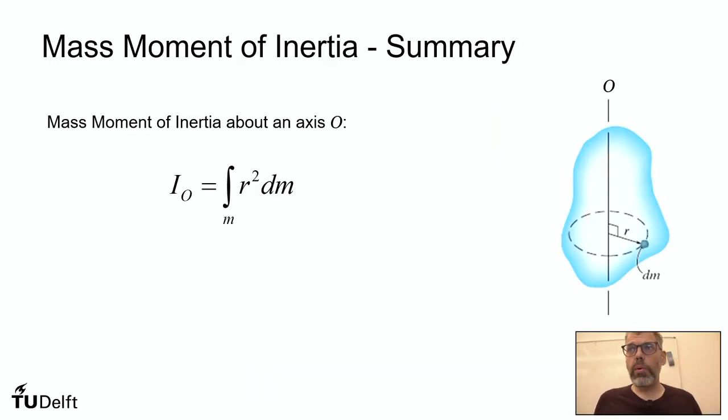So let's summarize this. The mass moment of inertia about axis O is the integral over the entire mass domain of r squared dm. So not too different than the moment of inertia we've seen. It's just with respect to mass and its radial position. So it goes all the way around the axis. It's not, because it's a volume, it's not an area. So there is a slight difference there. It has the units of kilogram times meter squared, as I said.